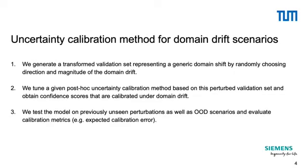I would now like to go into our approach. First, we obtain a transformed validation set representing a generic domain shift. We sample domain drift scenarios by randomly choosing the direction and magnitude of the domain drift, and use these scenarios to perturb the validation set to simulate a generic domain drift. We sample from a set of 10 noise levels covering the entire spectrum from in-domain to truly out-of-domain. Each noise level corresponds to the variance of a Gaussian, which in turn is used to sample the magnitude of domain drift.